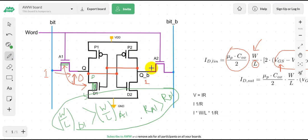For write operation, the access transistor must be stronger than the P2 transistor. Because if we want to write one here, we need to make Q̄ from one to zero. And to do that, A2 will help us but not P2.